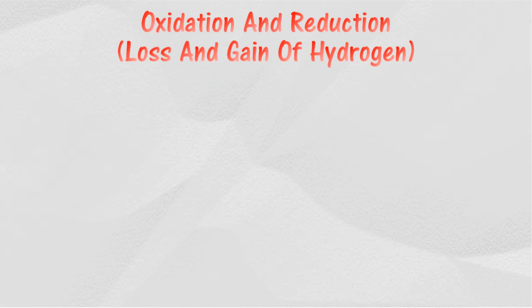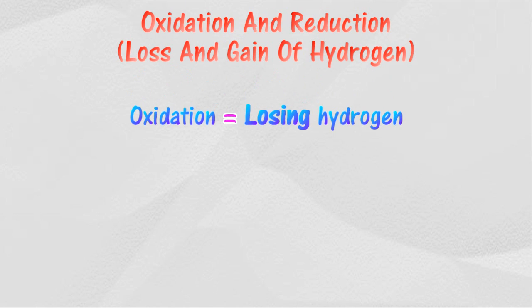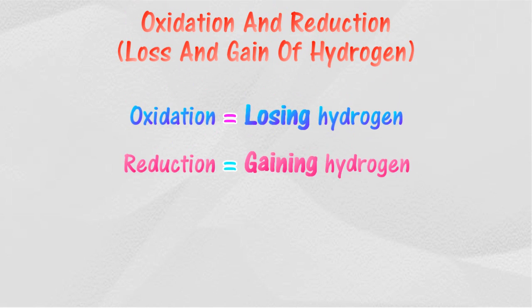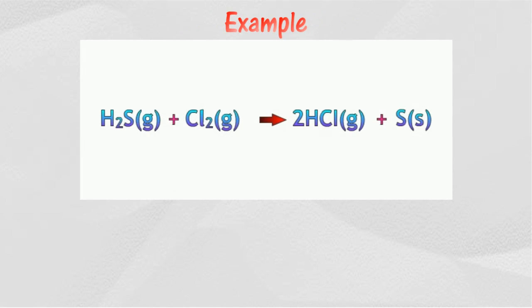Oxidation and reduction can be defined in terms of loss and gain of hydrogen. Oxidation is the process of losing hydrogen, and reduction is the process of gaining hydrogen. This interpretation focuses on the loss or gain of hydrogen to identify oxidation and reduction.